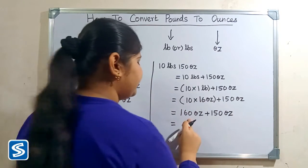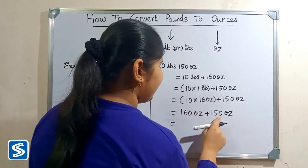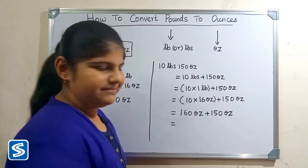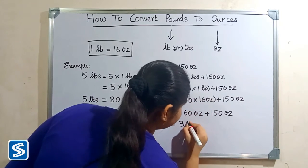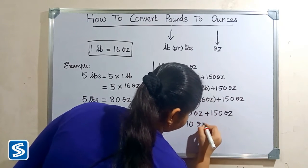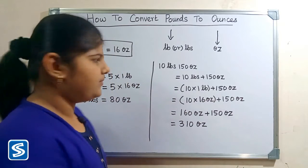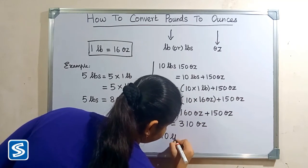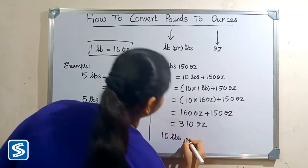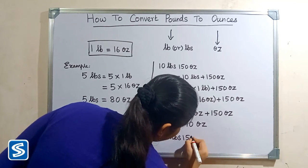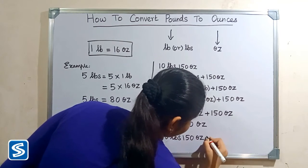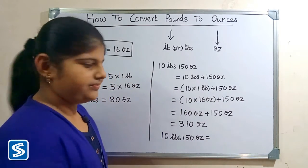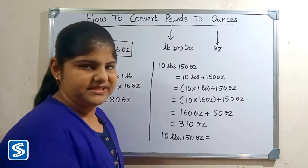160 ounces plus 150 ounces will be 310 ounces. So 10 pounds 150 ounces is equal to 310 ounces.